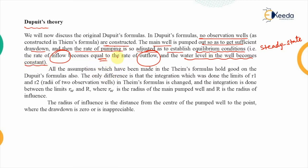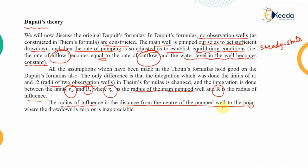All the assumptions made in the Theis theory hold true in Dupuit theory as well. The only difference is that instead of the limits R1 and R2 (the radii of two observation wells used in Theis theory), here we integrate from R_w to R, where R_w is the radius of the main pumped well and R is the radius of influence — the distance from the center of the pumped well to the point where the drawdown is zero or negligible, i.e., where the drawdown has been completely eliminated.